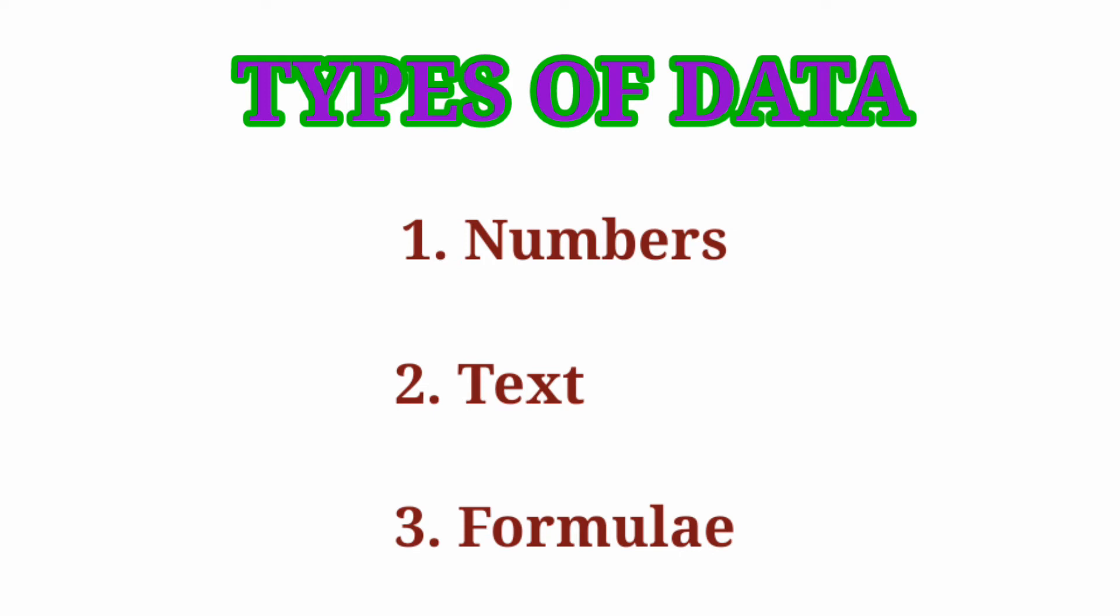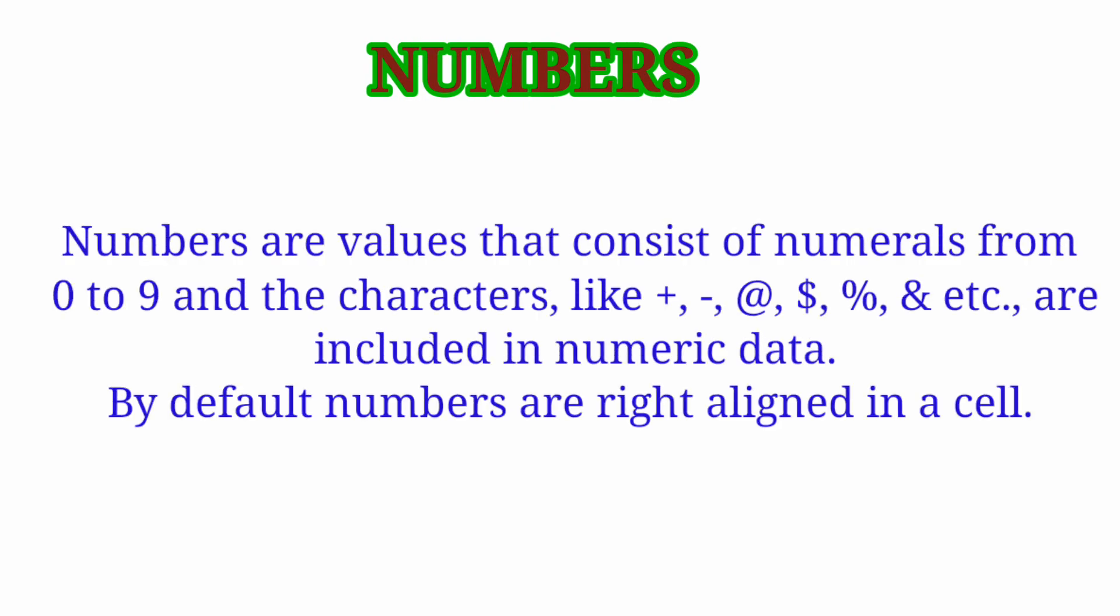The types of data - three types of data can be entered in Microsoft Excel, which are as follows: Numbers - numbers are values that consist of numerals and the characters like +, -, @, $, %, etc. are included in numeric data. By default, numbers are right aligned in a cell.